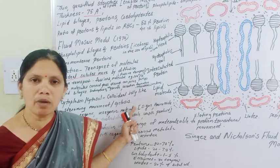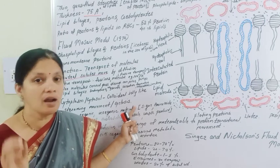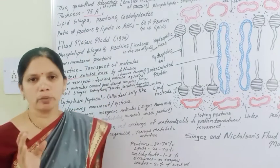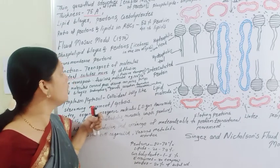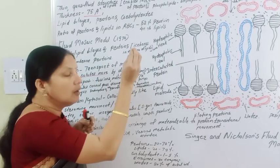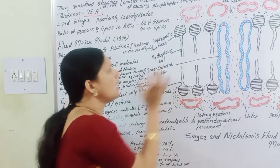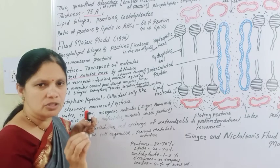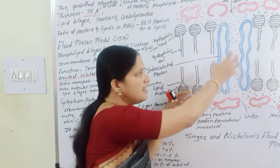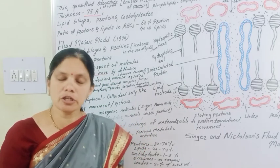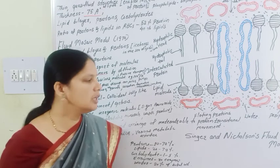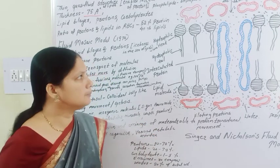So in this way, this is all about the structure of the cell membrane or plasma membrane — which is formed from the phospholipid bilayer and protein. The most accepted model of the plasma membrane is the fluid mosaic model.